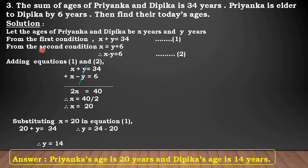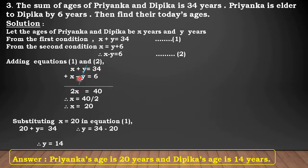From the second condition, Priyanka is elder to Deepika by 6 years. Therefore, X is equal to Y plus 6. By rearranging, we get X minus Y is equal to 6. Number this equation as 2. Now, we can observe that the variable Y has opposite coefficients. Therefore, adding equations 1 and 2, plus Y and minus Y get cancelled. We get 2X is equal to 40. Therefore, X is equal to 40 divided by 2, which equals 20. So the age of Priyanka is 20 years.